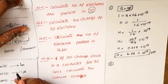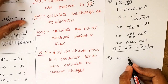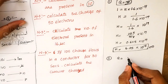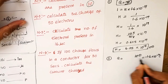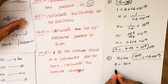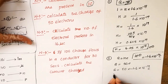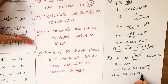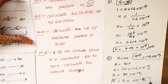Numerical 2: Calculate the charge of 50 electrons. One electron has a charge of −1.6 × 10⁻¹⁹ C. For 50 electrons, Q = 50 × (−1.6 × 10⁻¹⁹) = −80 × 10⁻¹⁹ = −8.0 × 10⁻¹⁸ coulombs.